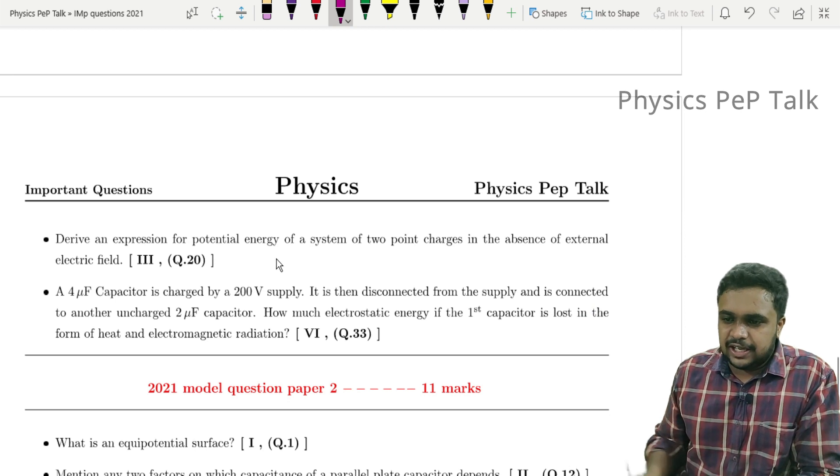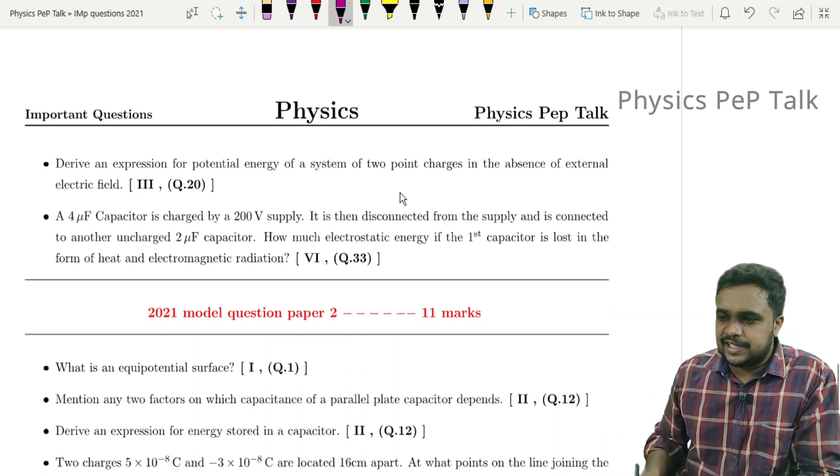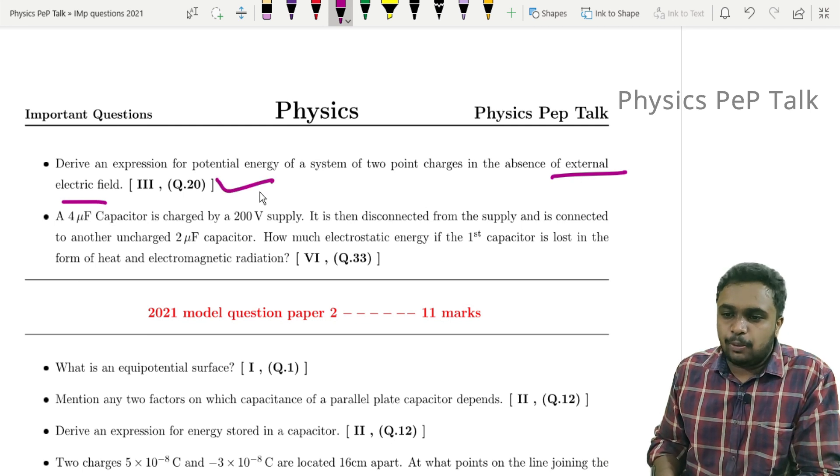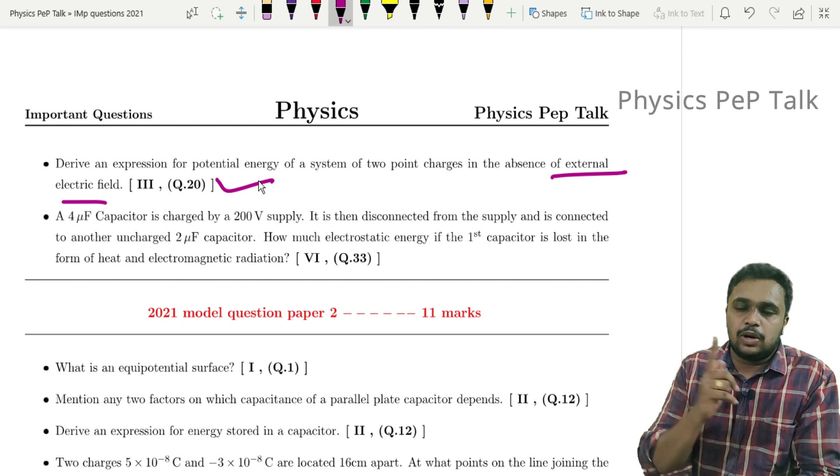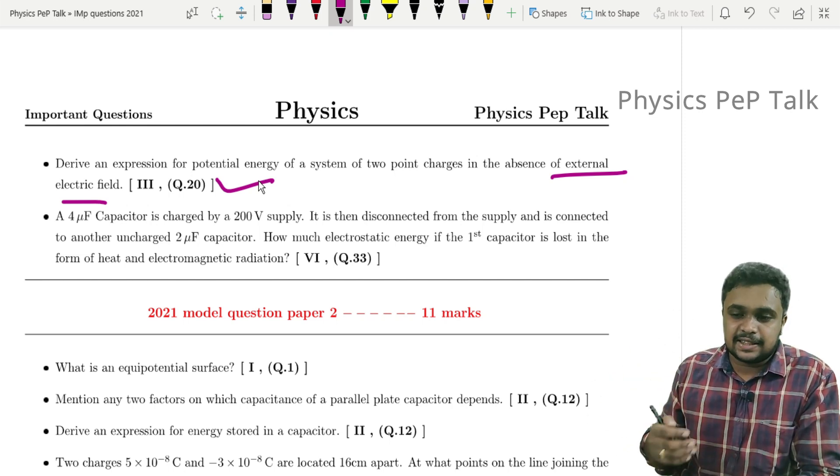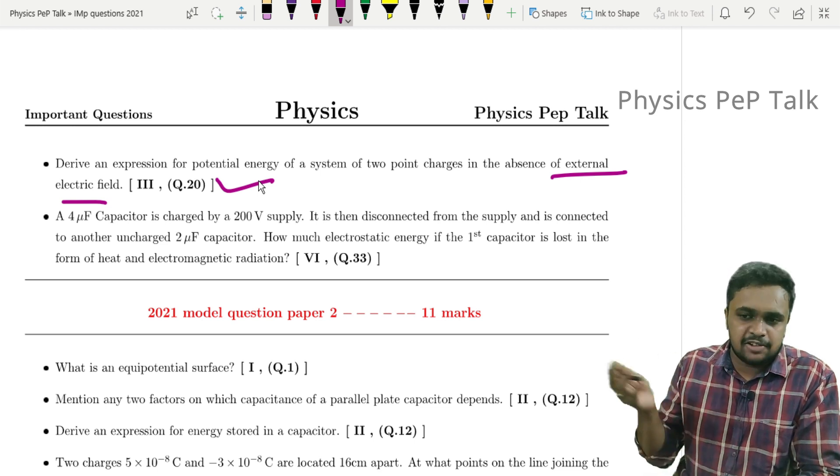Derive an expression for potential energy of a system of two point charges in the absence of external electric field. Here, two point charges - potential energy. Due to system of charges, there can be one point charge, two charges, three charges, or n number of charges.